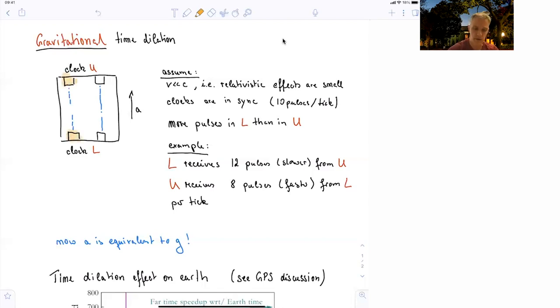And the clock, the upper clock, U clock, submits the same thing. They both have the same frequency. Let's say 10 pulses per tick. We also assume that we don't have to consider special relativity effects here. So the velocity of this thing is very small. So relativistic effects are small.